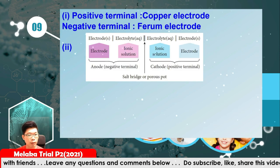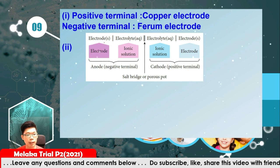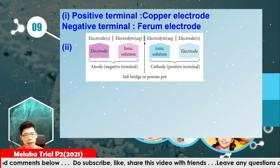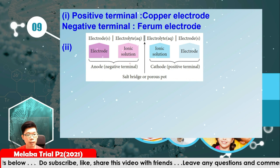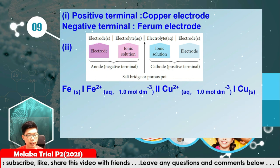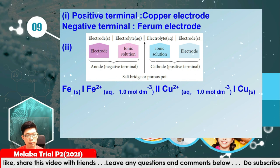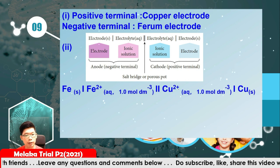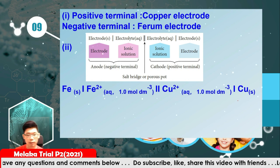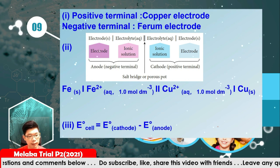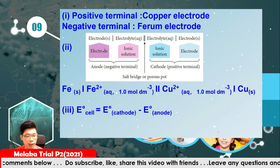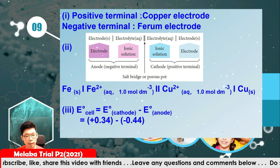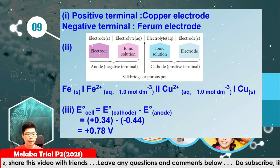For cell notation: write the anode electrode, slash, electrolyte, double slash (salt bridge), then cathode electrolyte, slash, cathode electrode. So: Fe(s) | Fe2+(aq, 1 mol/dm3) || Cu2+(aq) | Cu(s). To calculate the cell voltage: E_cell = E_cathode minus E_anode = +0.34 minus (−0.44) = +0.78 V.